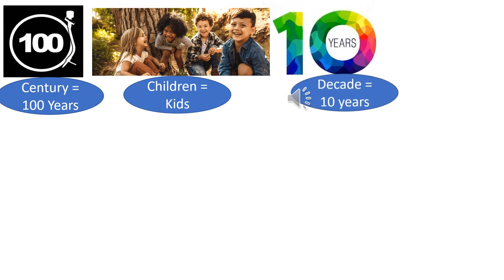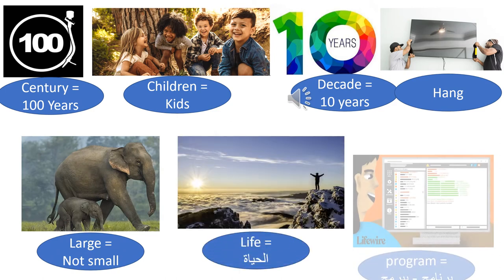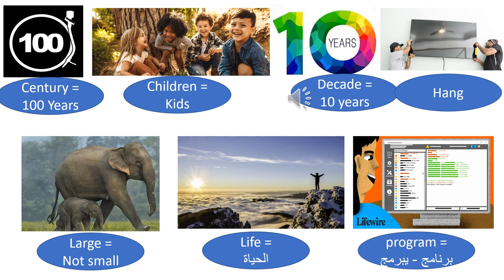The words come from page 6 of your book. Let's start. We have six new vocabulary words: century, children, decade, hang, large, life, and program. Century equals 100 years. Children is a plural noun — the singular is 'child' — and it means kids.